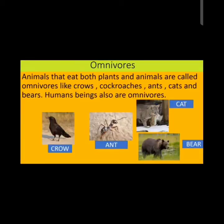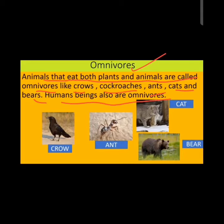Animals that eat both plants and animals are known as omnivores, like crows, cockroaches, ants, cats, bear, and human beings. Chimpanzee is also an omnivore because it eats fruit, leaves, nuts, seeds, and stem, as well as ants, birds' eggs, fish, and termites. Chimpanzees also occasionally kill and eat baboons and wild pigs.